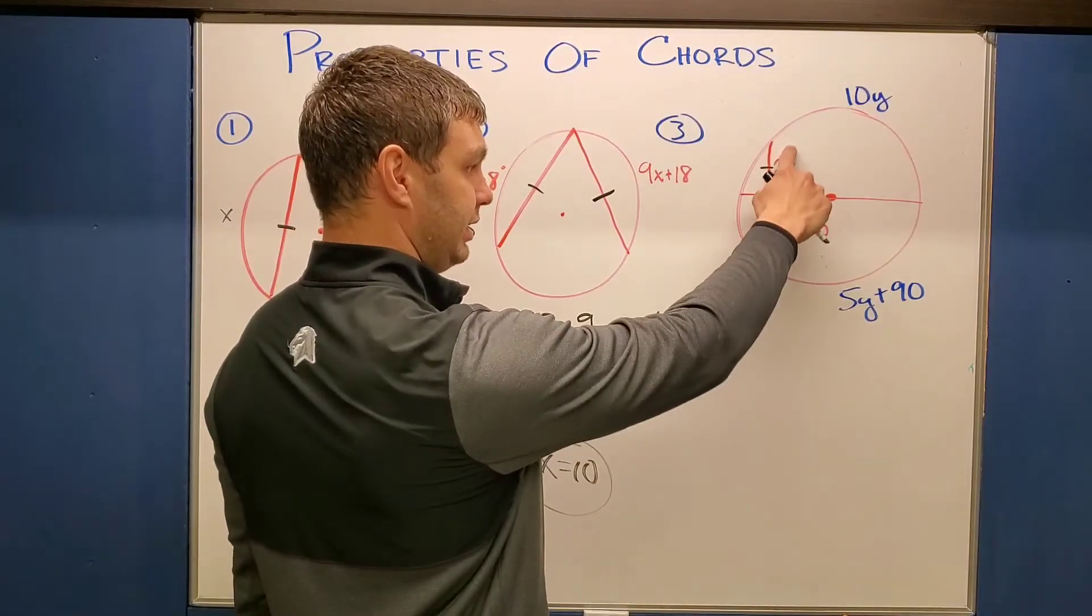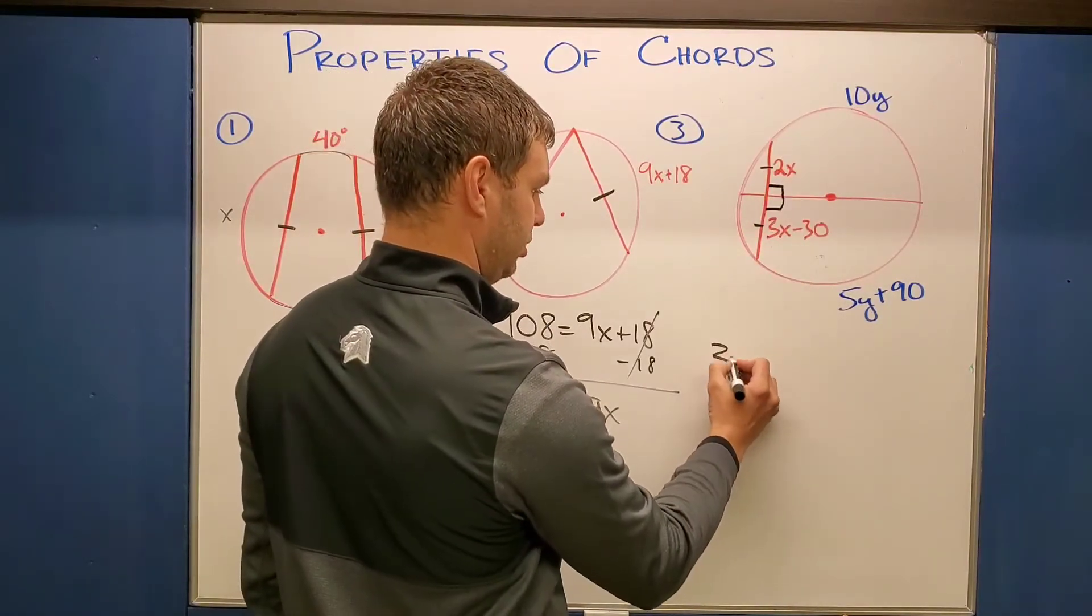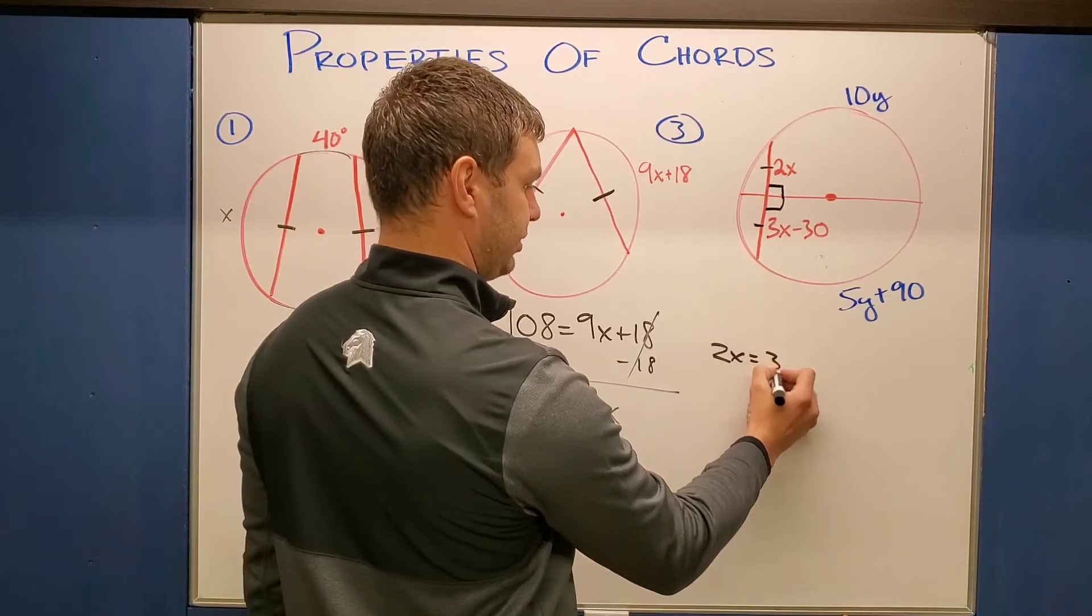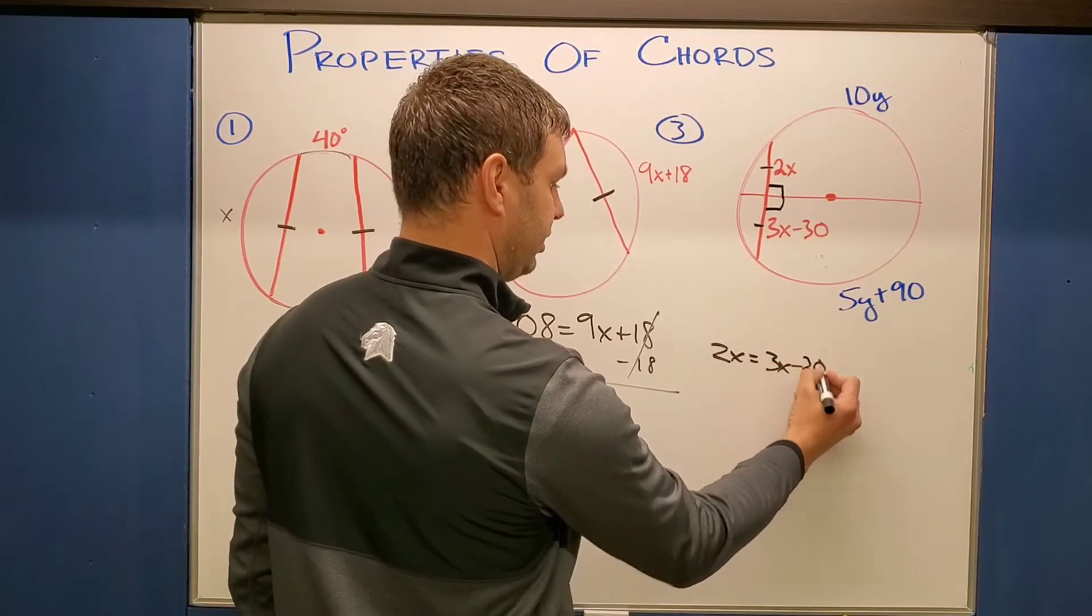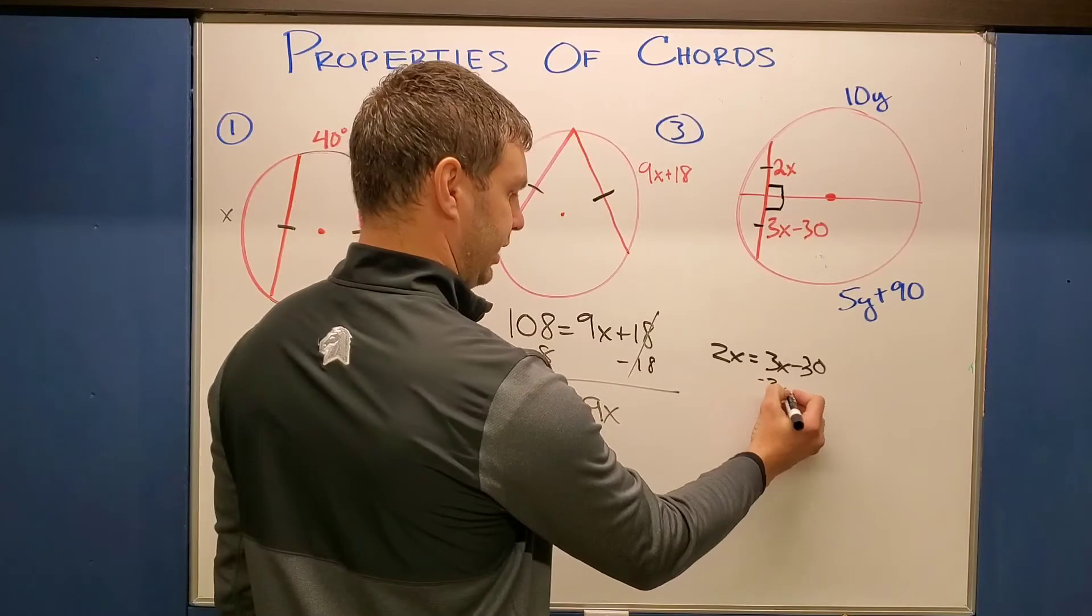Okay, so because of that, I can say 2X equals the other one, 3X minus 30. And if I solve for X here, let's see, subtract 3X.